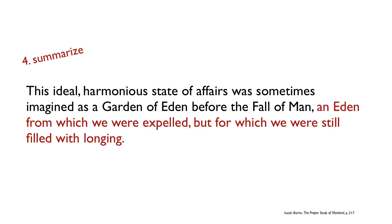The fourth way you can use an appositive is as a summarizing phrase that helps your readers understand a particular term you're using. From Isaiah Berlin, we have 'an Eden from which we were expelled, but for which we were still filled with longing.' That appositive is summarizing or adding more information about the Garden of Eden before the fall. Some people call these resumptive or summative modifiers because they summarize a key term already given in the sentence.